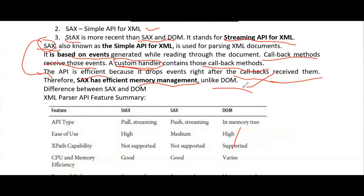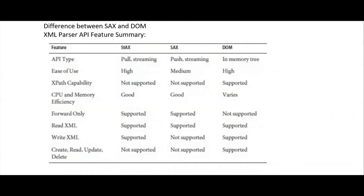Now let us look into the differences between these three XML parsers: SAX, DOM, and STAX. The first difference is in terms of API type. The API type for STAX is pull-type — it is pull streaming — whereas SAX is push streaming.